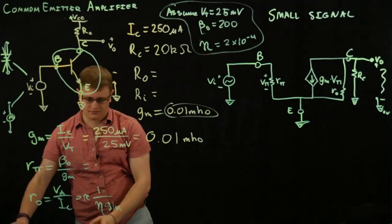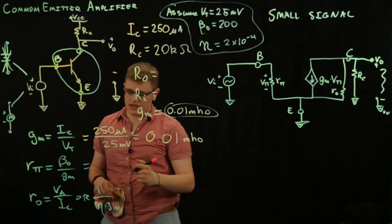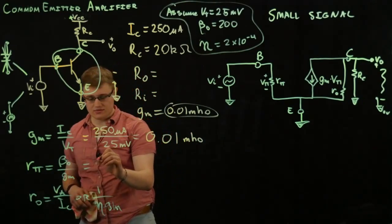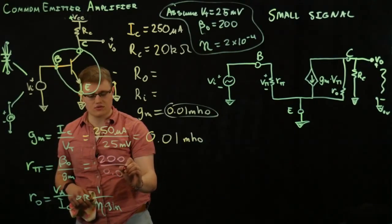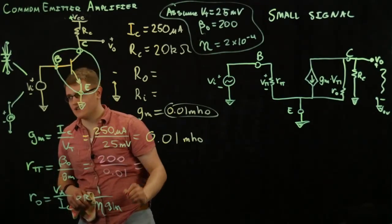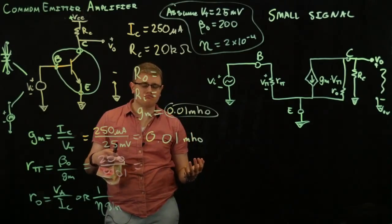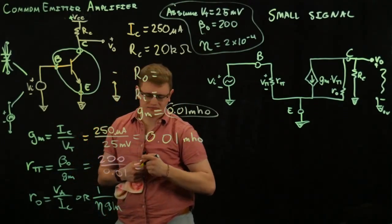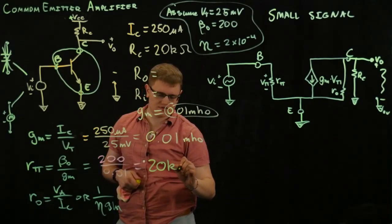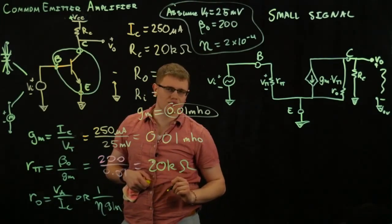So, we've got beta here. And we know GM. We know our transconductance already. We'll do 200 divided by GM, which is 0.01. And what does that get us? That gets us about 20K. What am I saying? That's exactly 20K. So, 20 kiloohms.